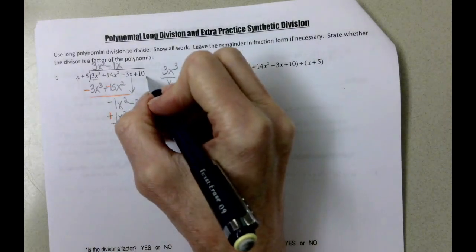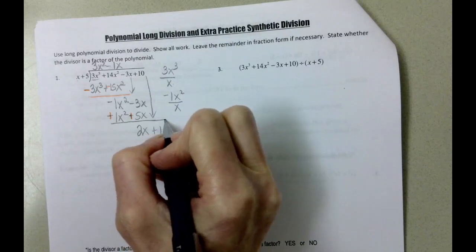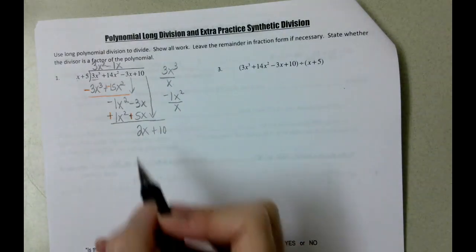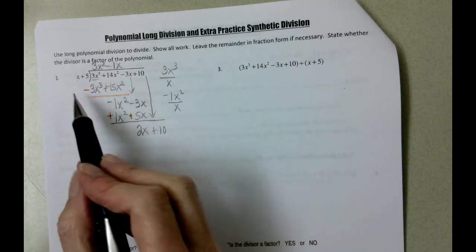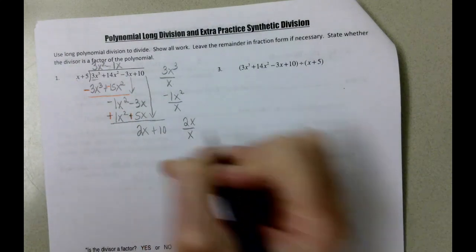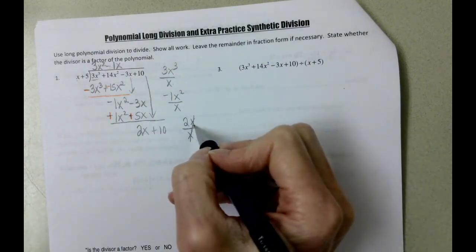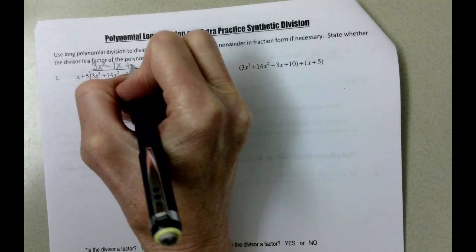And we're going to have to bring down the 10. So we're almost done here. We need to divide 2x by x. It's all about the variables. So 2x divided by x, well, the x's cancel out. It's positive 2x divided by positive x, so it's positive 2.